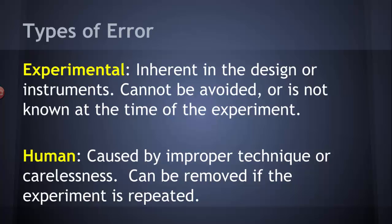The other type of error is human error. These are mistakes caused by improper technique or you're careless, you knock something over. If you make human errors, the proper way to address that is to just do the experiment again and not make those same mistakes. Improve your knowledge, improve your technique so that you're not making the same human errors. We are not going to be interested in human errors.